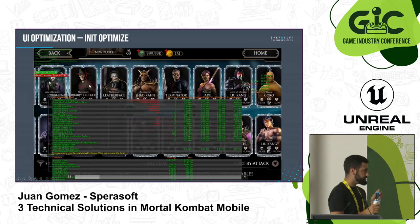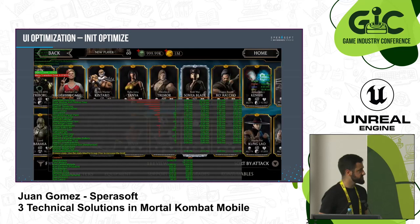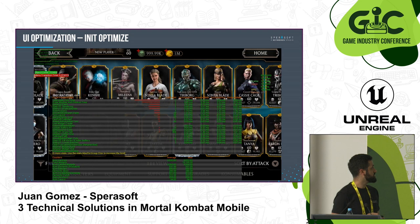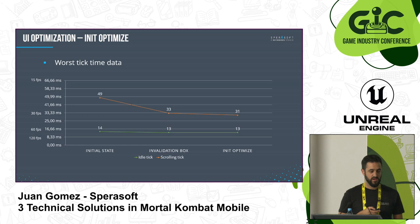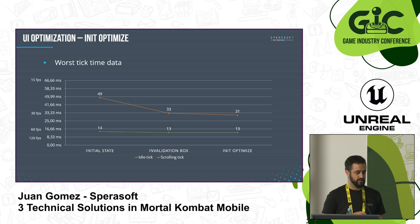We can see that we are reducing the spikes a little bit. The data shows some improvement, but it's not a huge improvement because this benchmark was done on a PC with an SSD. It was a bigger problem on devices where you have to access internal or external memory — that was the bottleneck there. But everything counts.